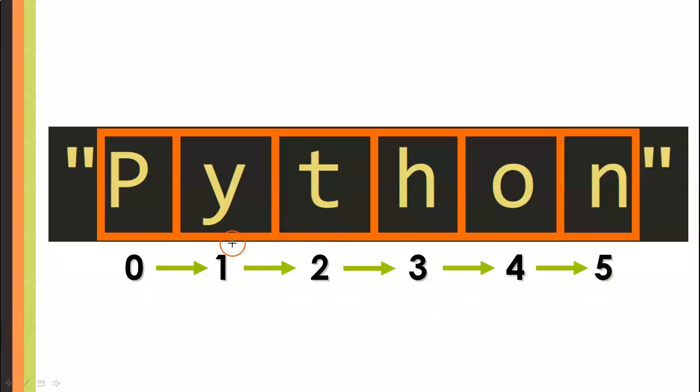In this case, index 1 corresponds to the letter Y. Index 2 corresponds to the letter T. Index 3 corresponds to the letter H, and so on. 4 corresponds to the letter O, and 5 corresponds to the letter N.